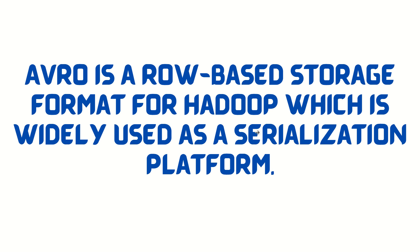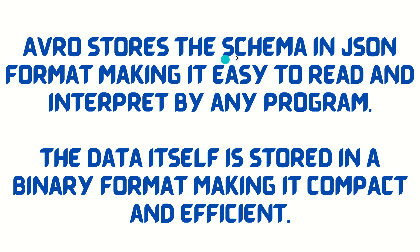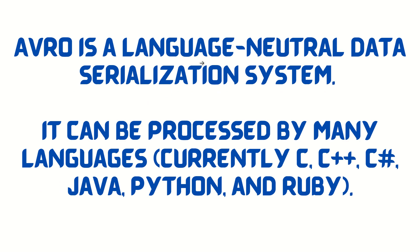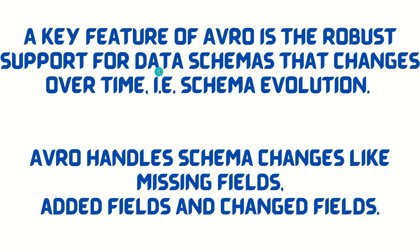Deserialization means converting binary back to objects. Avro stores its schema in JSON format, making it easy to read and interpret by any program. The data itself is stored in binary format, making it compact and efficient. It is a language-neutral data serialization system, meaning it doesn't depend on any particular language — Avro can be processed by many languages including C, C++, C#, Java, Python, and Ruby. A key feature of Avro is robust support for data schemas that change over time, handling schema evolution such as missing fields, adding fields, or changing fields.